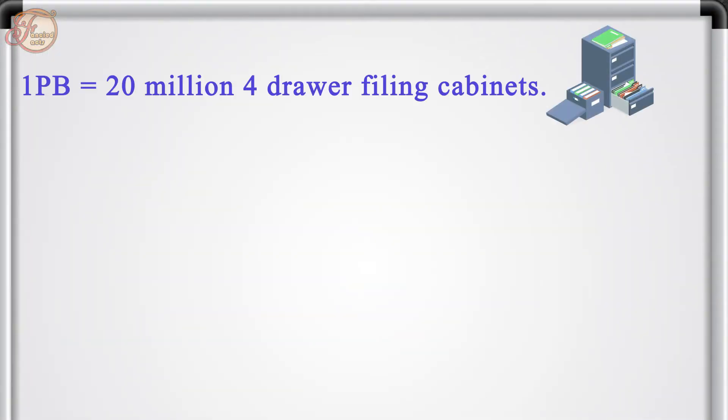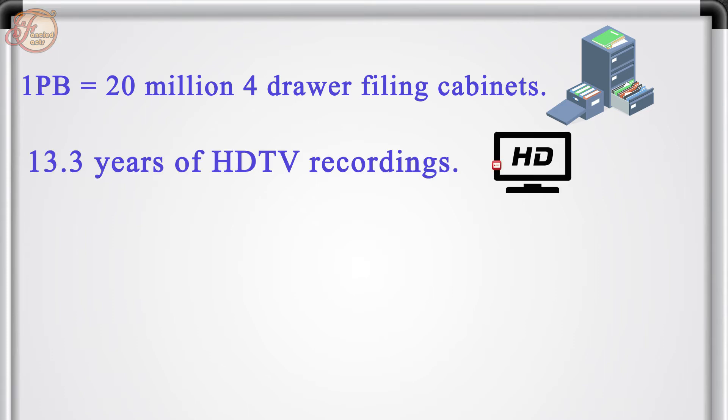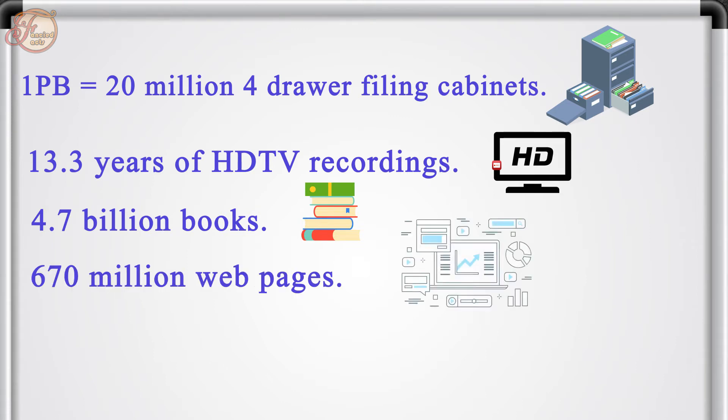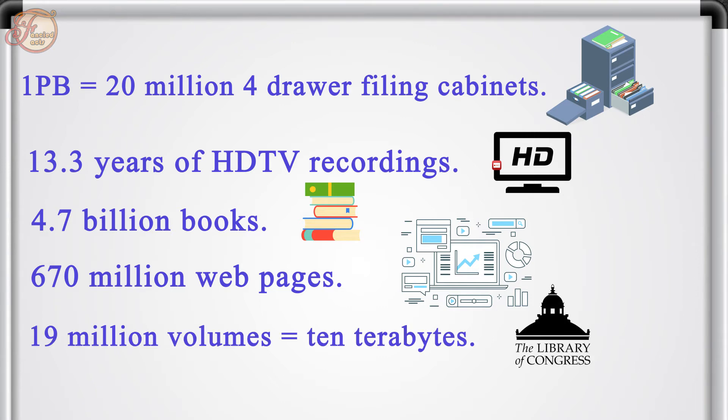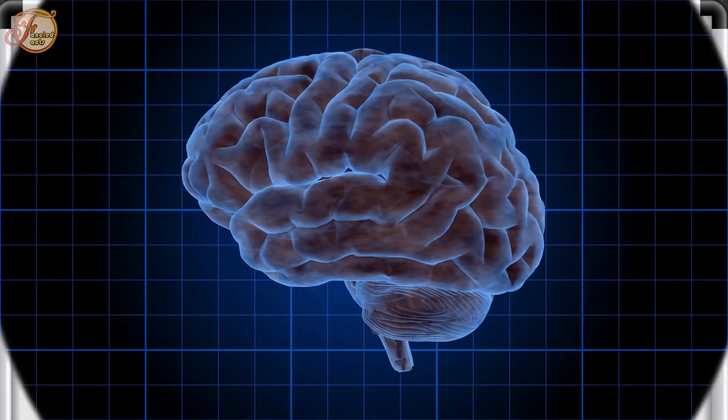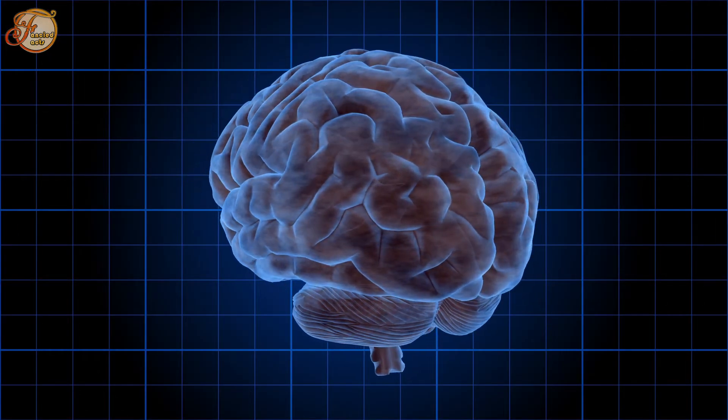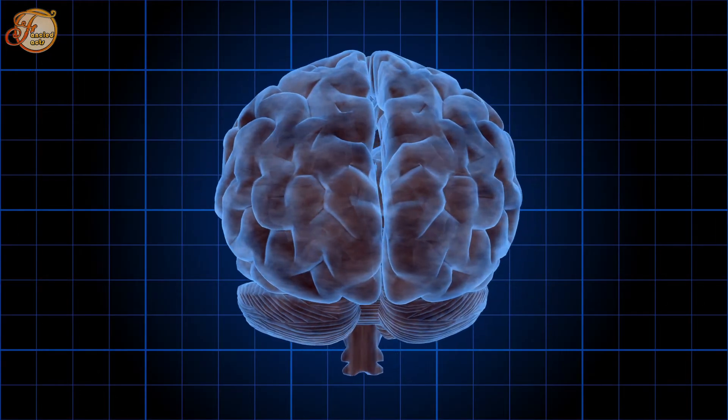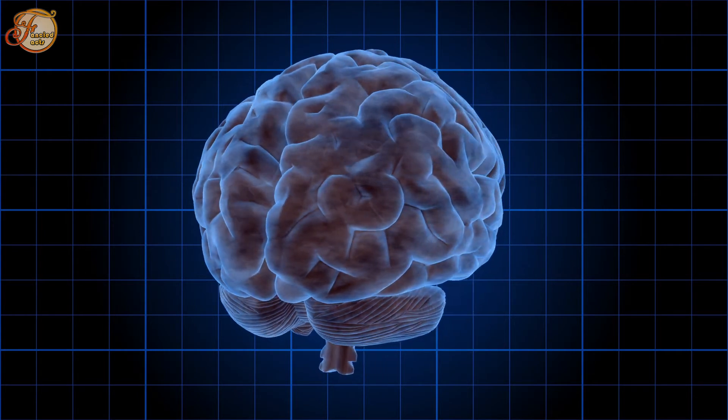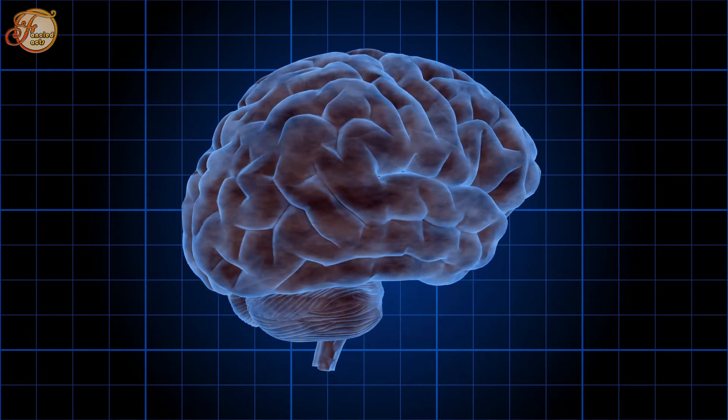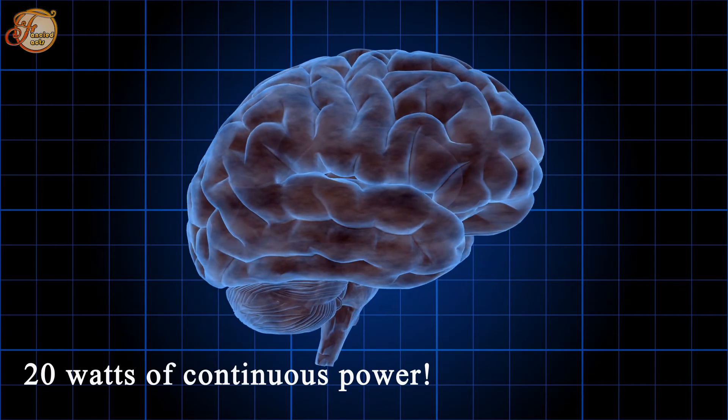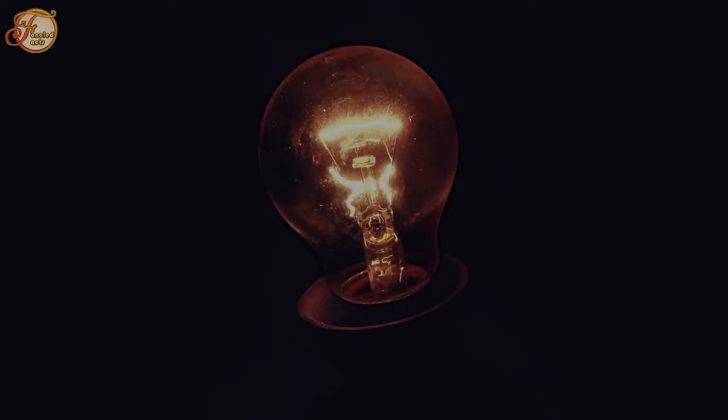One petabyte is the same as 20 million 4-door filing cabinets filled with text, 13.3 years of HDTV recordings, 4.7 billion books, and 670 million web pages. 19 million volumes in the U.S. Library of Congress represent about 10 terabytes of data. It's incredibly mind-blowing when you think about it, our brain's ability to hold so much information and process it at the incredible energy efficiency of only 20 watts of continuous power. It's like the power consumption of a dim light bulb.